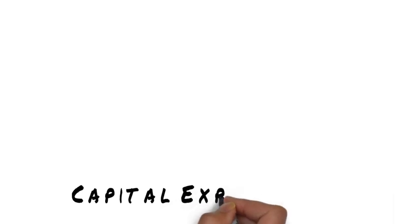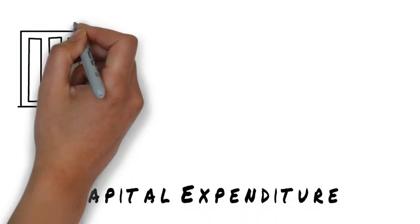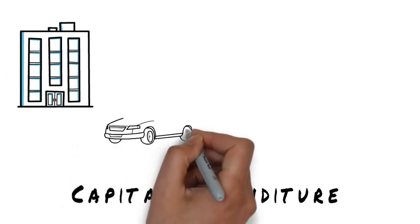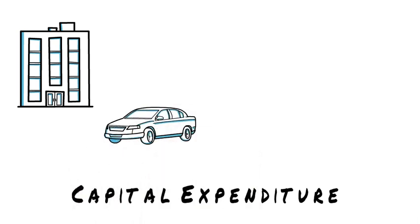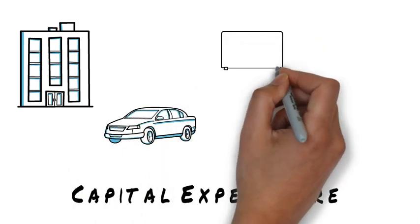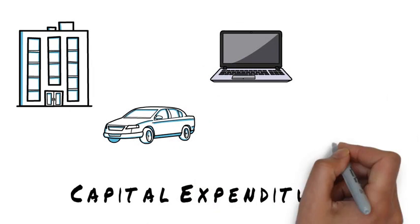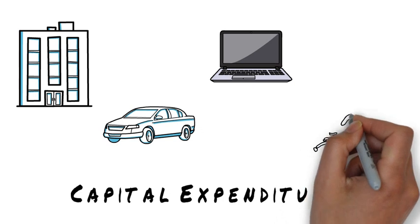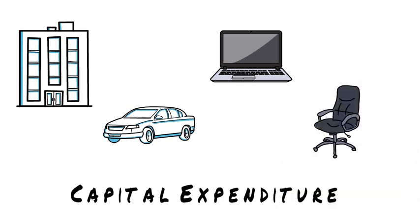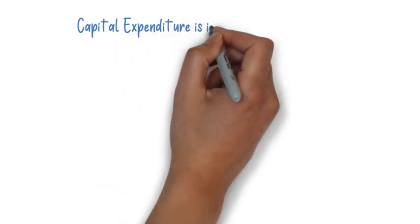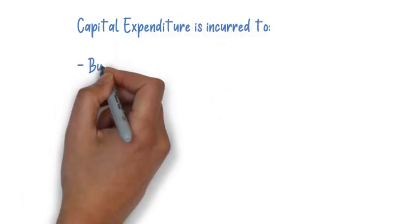Before moving on to learn what capital and revenue expenditure are, let us discuss some examples of capital expenditure. Whenever we buy or construct a building for office use, this is capital expenditure. Buying a motor vehicle or a motorbike for the business, as well as laptops, printers, office equipment, or office furniture — these are also capital expenditure.